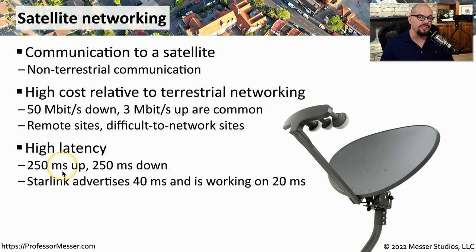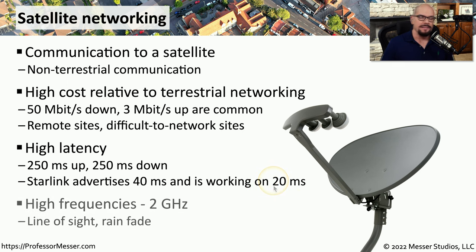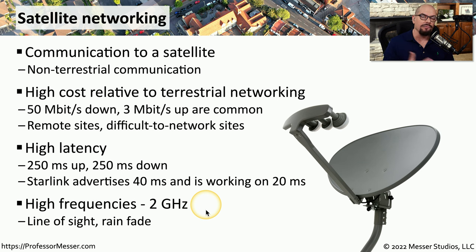There are some newer satellite technologies, such as Starlink, which advertises 40 millisecond latency times, and they're working on getting that down to 20 milliseconds. These satellite connections tend to operate in higher frequencies, such as the 2 gigahertz range, and they operate over line of sight, which means if you do have rain clouds that come in, you'll have rain fade, which means you'll lose your connection while that rain is between you and the satellite.